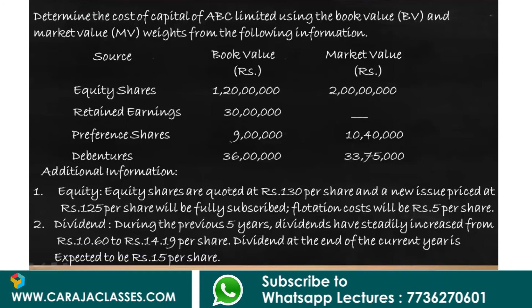Determine the cost of capital of ABC Limited using book value and market value weights. The sources are: equity shares with book value 1.2 crore and market value 2 crore; retained earnings with book value 30 lakh; preference shares with book value 9 lakh and market value 10 lakh; and debentures with book value 36 lakh.